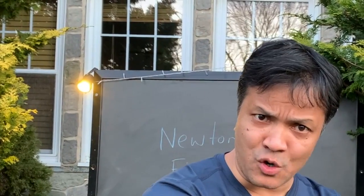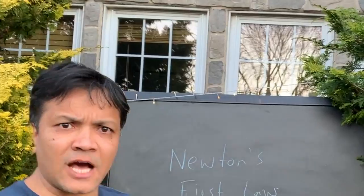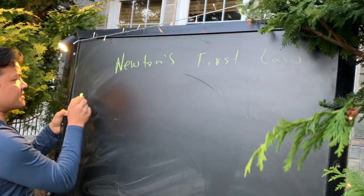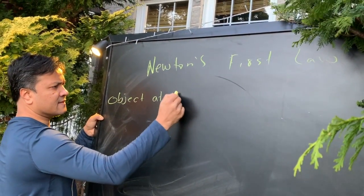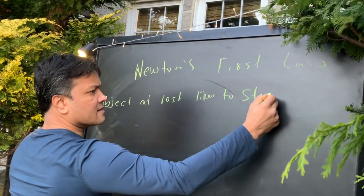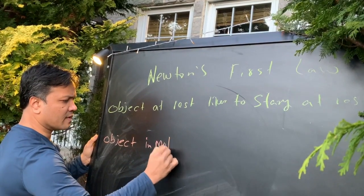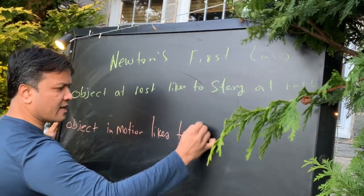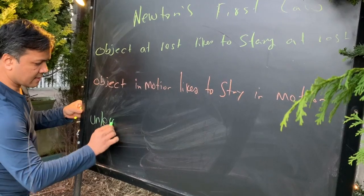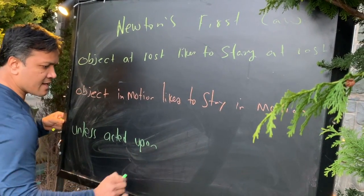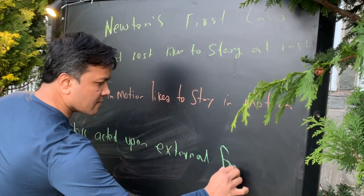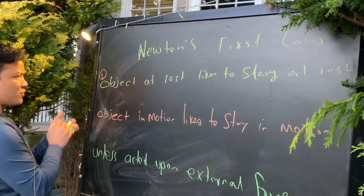He wanted to solve the falling apple and falling moon problem, but the mathematics of his time was not advanced enough. So he created a new branch of mathematics — he called it calculus. He used calculus to lay the foundation of physics and to write three laws of motion. Today we're going to go over the first law of motion, called Newton's First Law: an object at rest likes to stay at rest, an object in motion likes to stay in motion, unless acted upon by an external force.